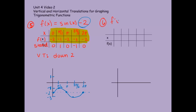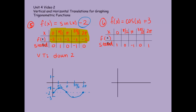Let's try a cosine graph. Number 6: f of x equals the cosine of x plus 3. My x values are not changing because this is a vertical shift, so I'll use my standard quadrantal angles. The standard y values for the cosine graph are 1, 0, negative 1, 0, 1. Now I'm going to add 3 because I have a vertical translation of up 3. So I get: 4, 3, 2, 3, and 4.